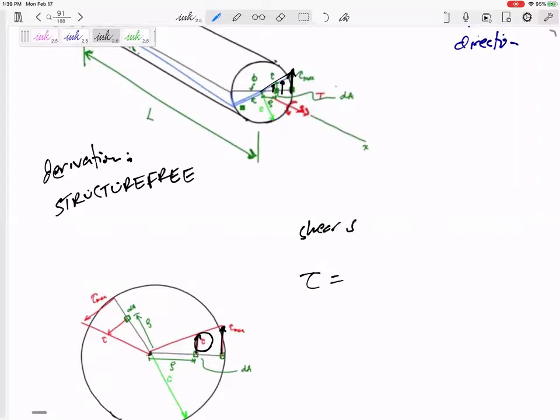The shear stress caused by an internal torque T would be zero at the middle. Imagine this was solid. Imagine you are a tiny little square on this face. If you were on the outside edge, you would be getting sheared more than if you were close to the middle. If you were at the middle, you would not feel any shear stress due to this internal torque T.